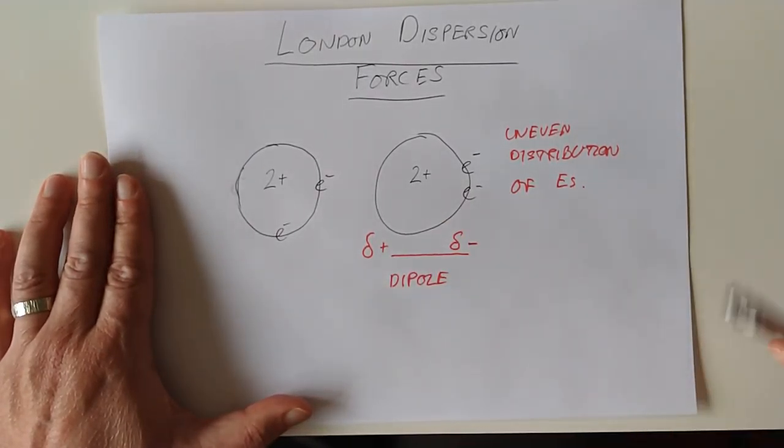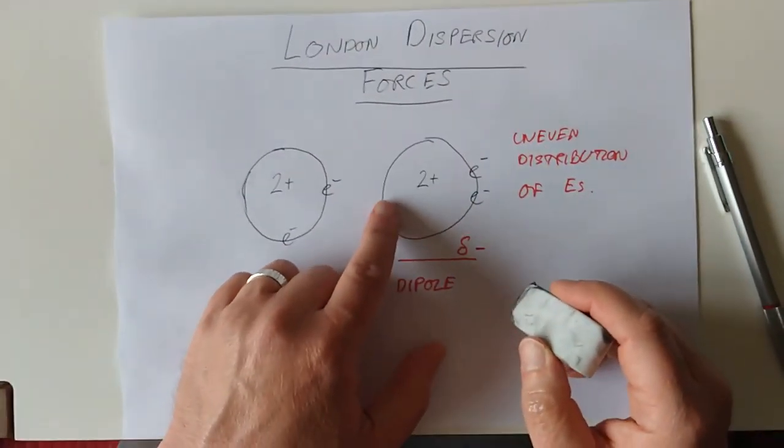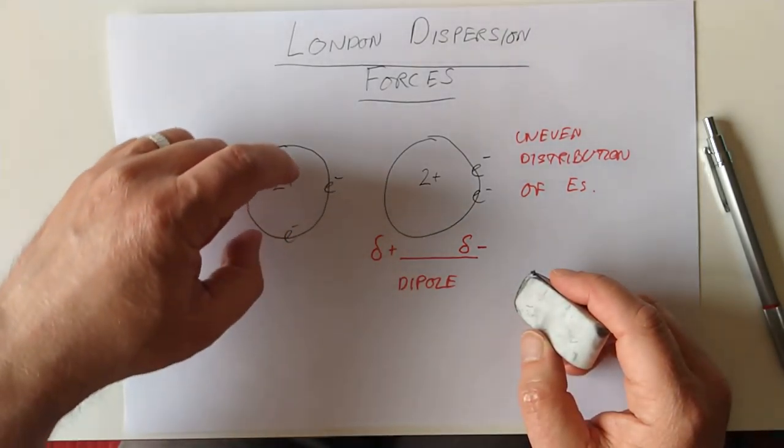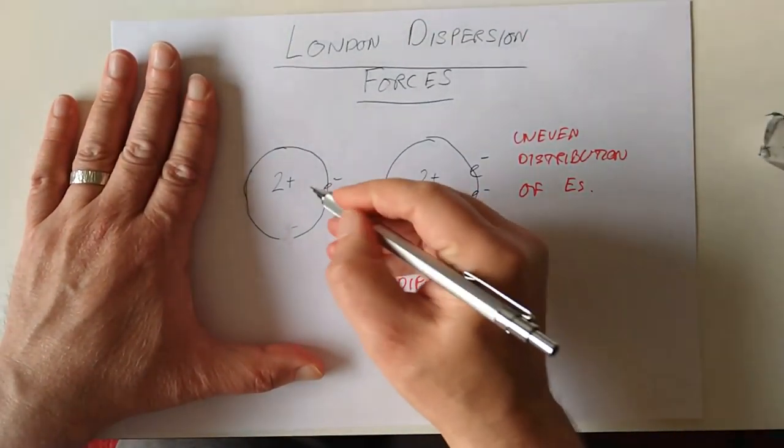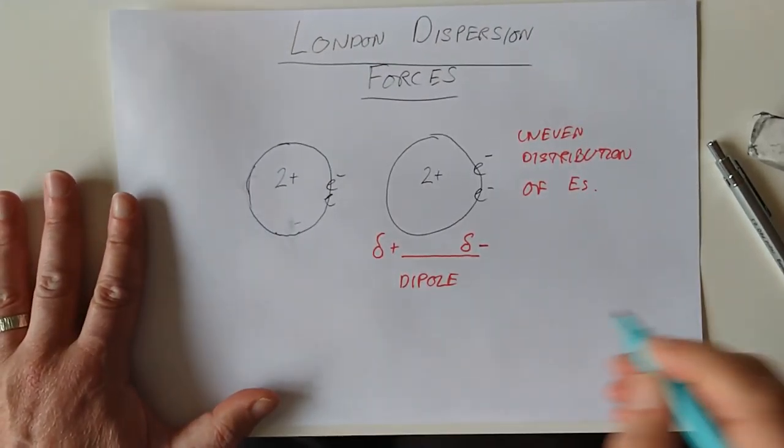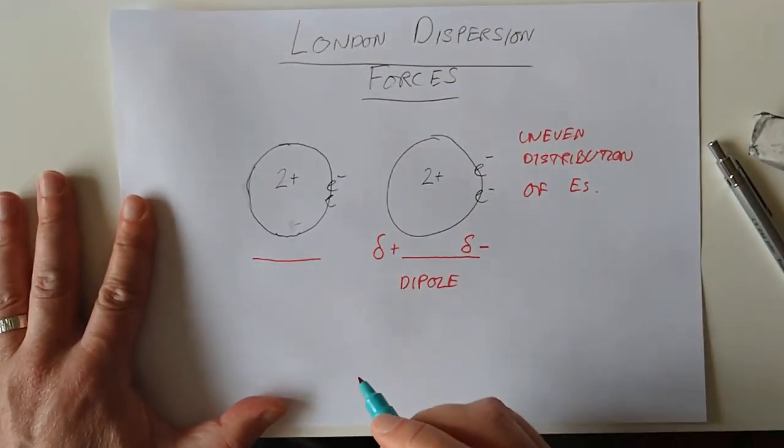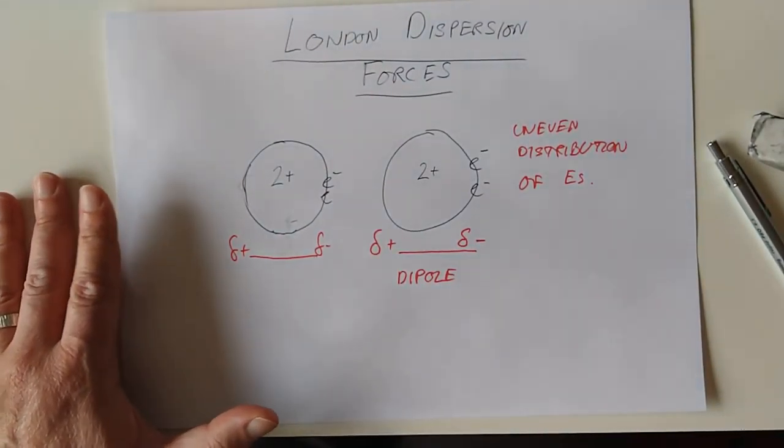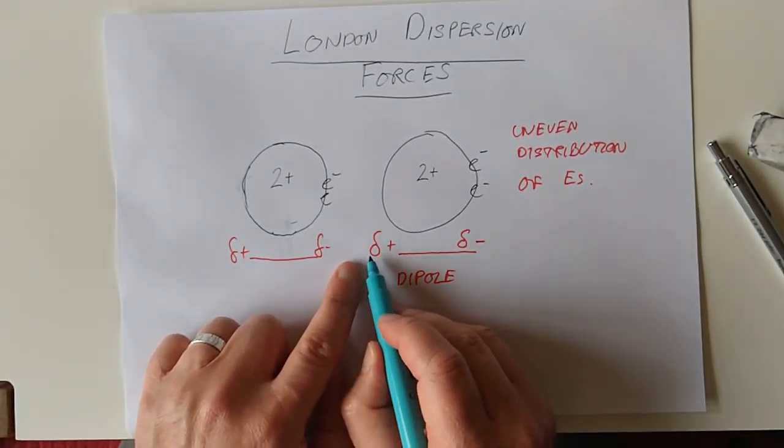The SQA want you to be familiar with this symbol, a lowercase delta, which indicates a tiny difference. So there is a tiny difference in this atom. What effect will that have? It's going to have an effect on this neighbouring atom because you've got a positive charge that will attract the electrons over to the end.